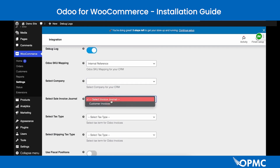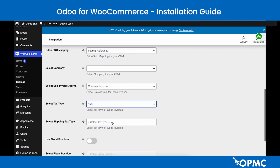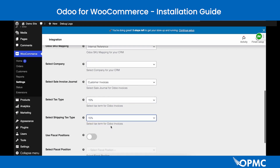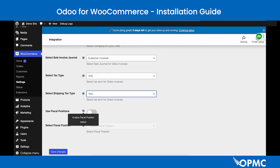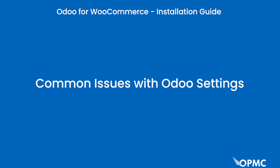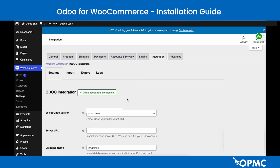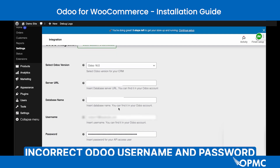Start by configuring the correct fields: select the Company, select the Sales Invoice Journal, select the Tax Type based on your tax requirements, select the Shipping Tax Type based on your shipping tax requirements, review the option to enable Fiscal Positions if applicable, and finally save the changes.